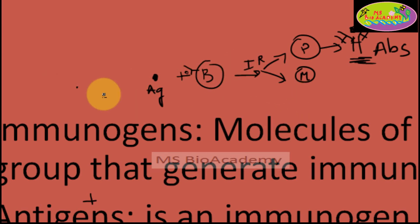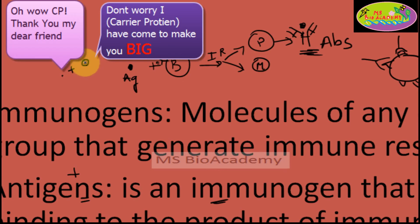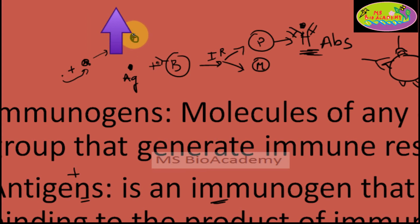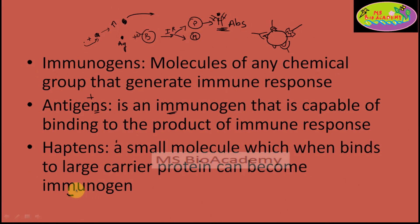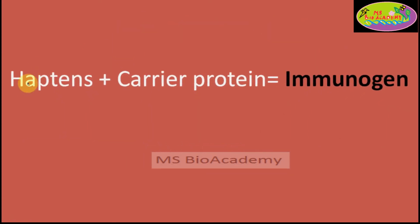Haptens are not able to generate any immune response on their own, until and unless they are bound to a carrier protein with a high molecular weight. The moment a hapten binds to the carrier protein, its molecular weight increases, which then allows it to bind to antibodies and generate an immune response. So: hapten plus carrier protein equals immunogen, but hapten alone is not equal to immunogen.